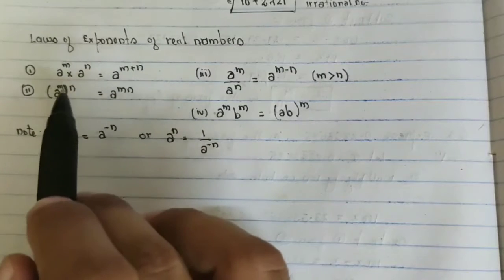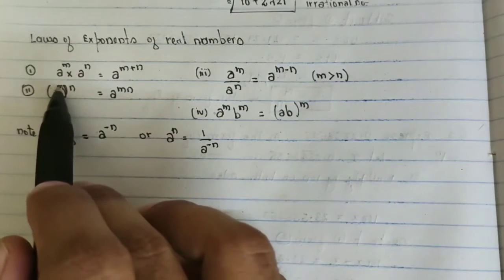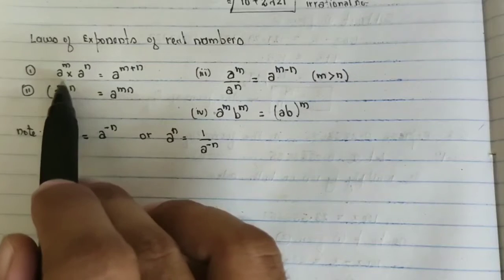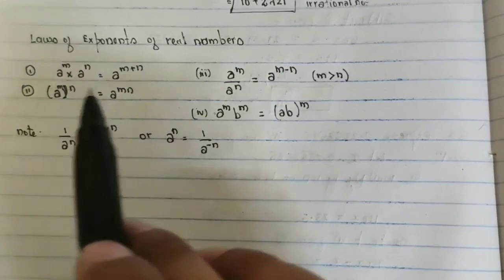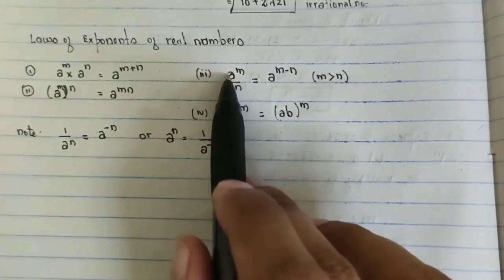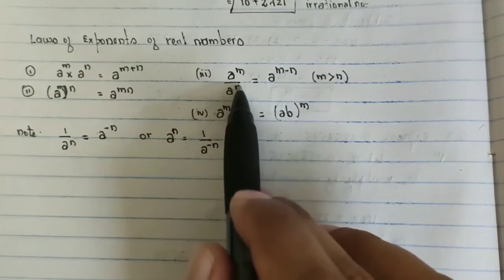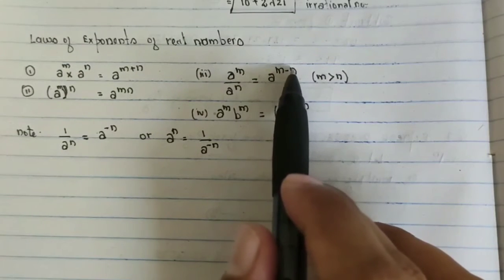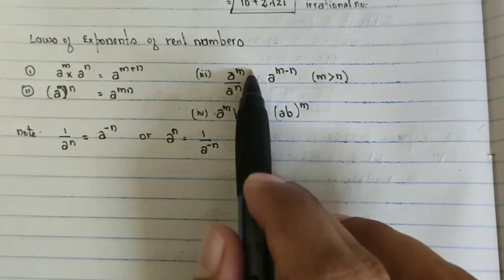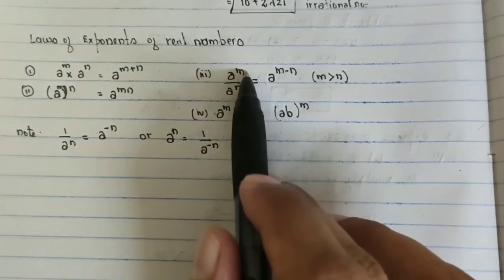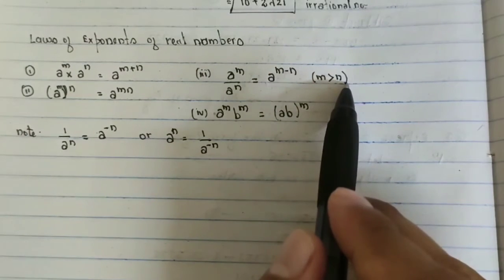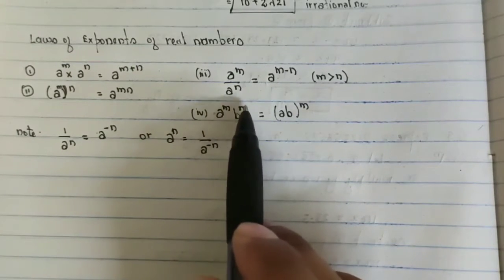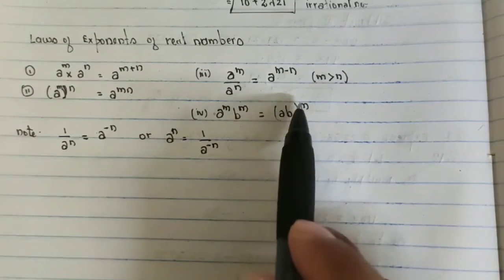Third rule: if one number with an exponent divides another number with an exponent, and the base is common, you can write base to the power m minus n. You subtract the exponents, where m is greater than n. Moving to the fourth rule: if both bases are different but the exponents are the same, you can write (a·b) to the power m.